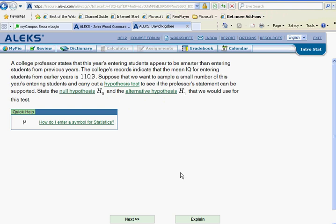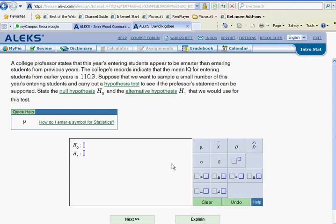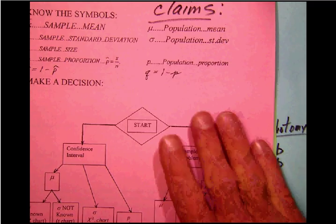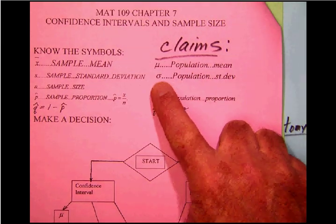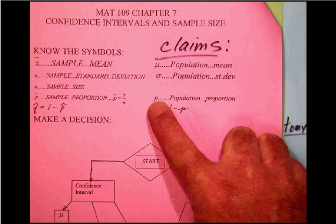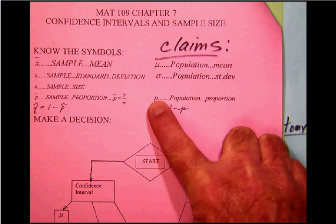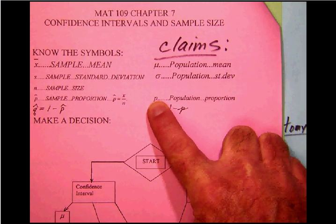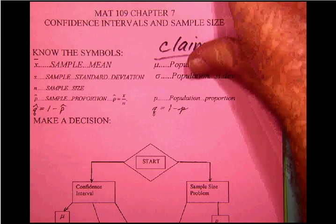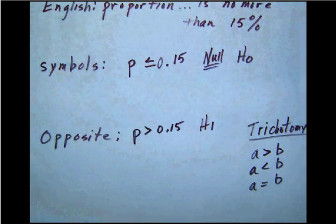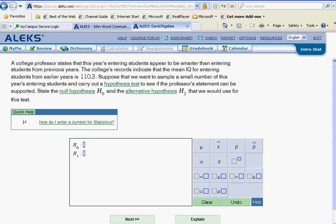Let's do another one of these because there are several varieties of these. As you can see here on our list of variables, that we could have claims about population means, we could have claims about population standard deviations, claims about population proportions. So we can have lots and lots of different types of claims sections. Let's go back here and take a look at another one of those over here in ALEKS.